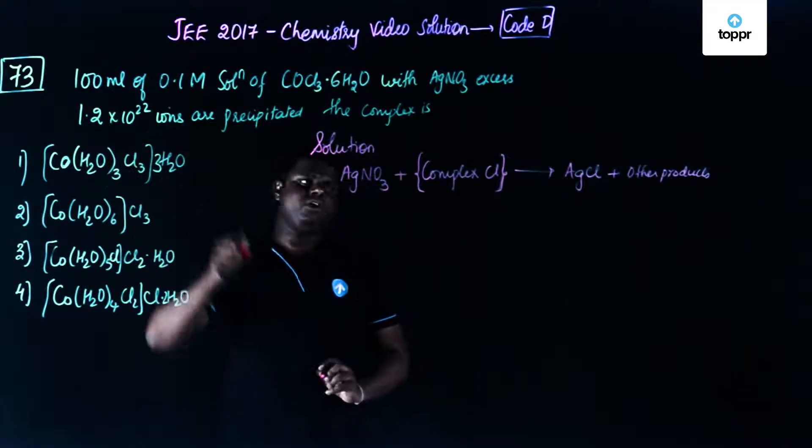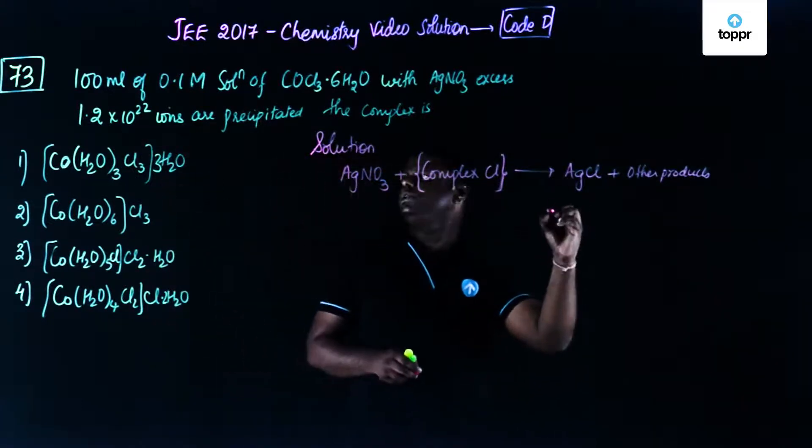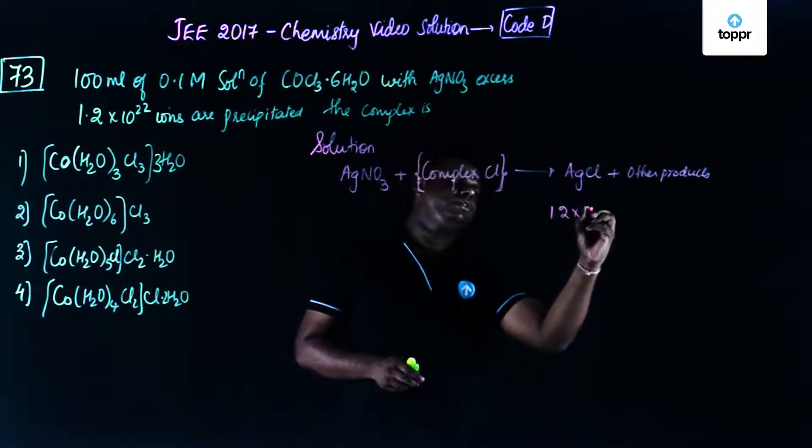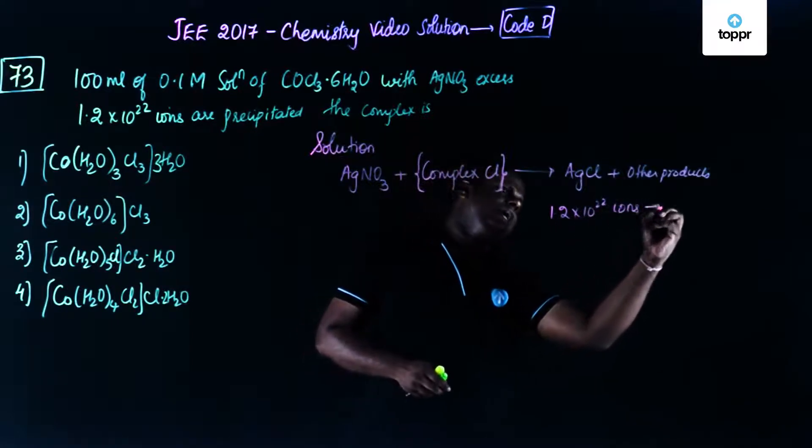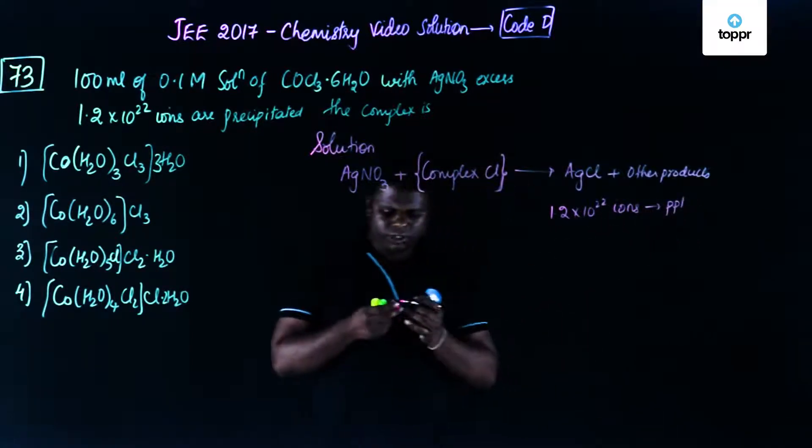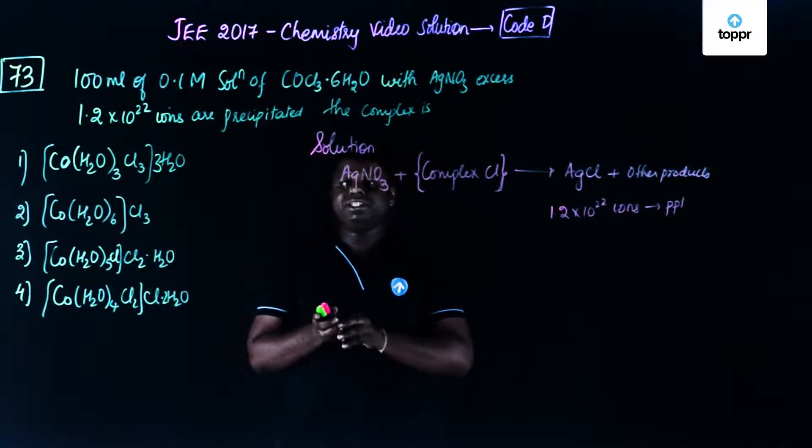So that means you could say that 1.2 into 10 to the power 22 ions get precipitated, correct? So what could happen? This is pretty much simple to understand.